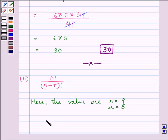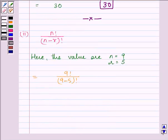Now let us substitute these values. We have 9 factorial divided by 9 minus 5 factorial, which gives us 9 factorial divided by 4 factorial.